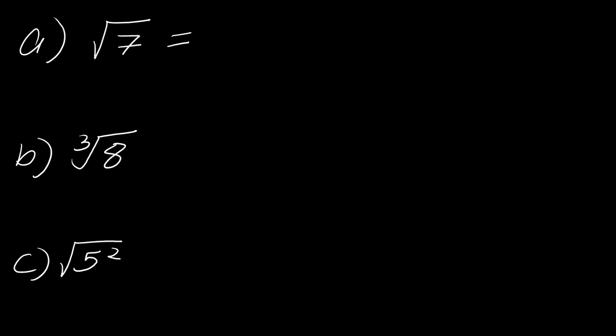So if I have square root of 7, remember that with the square root there's kind of an invisible 2 out here. So if I want to convert this to its exponential form, I just write this as 7 to the 1 over 2.